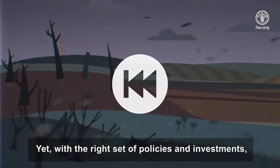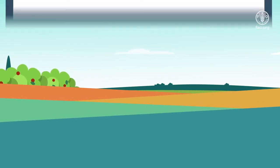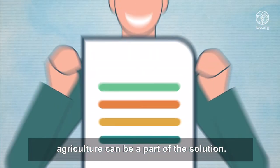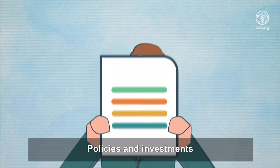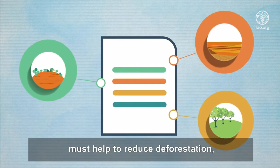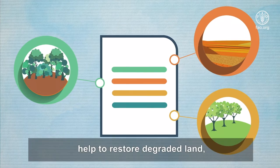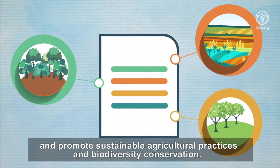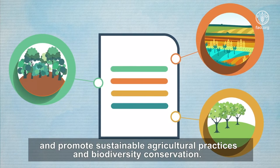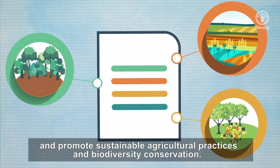Yet, with the right set of policies and investments, agriculture can be a part of the solution. Policies and investments must help to reduce deforestation, restore degraded land, and promote sustainable agricultural practices and biodiversity conservation.